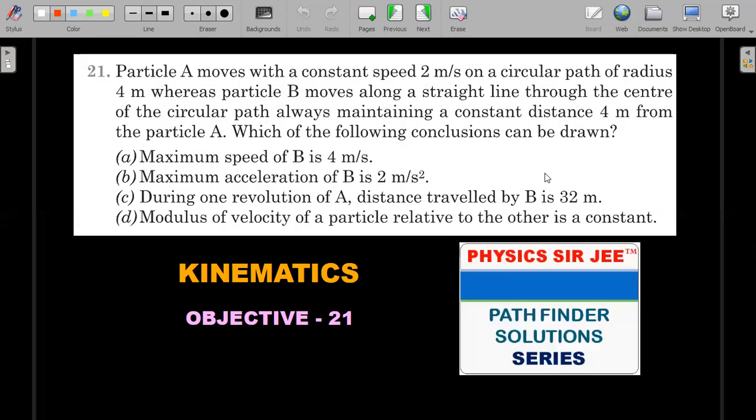In case you have not given it a try, here's the formal wording of the question. Please do stay till the end of the video - I'll be giving you a practice problem on a similar kind of relative motion problem. The level of this question I could say is at level one of Indian Physics Olympiad or even the JEE Advanced level. Particle A moves with constant speed 2 m/s on a circular path of radius 4 m, whereas particle B moves along a straight line through the center of the circular path, always maintaining a constant distance of 4 m from particle A.